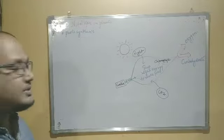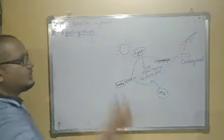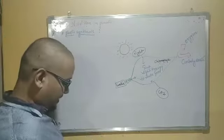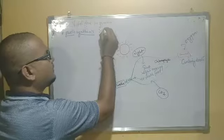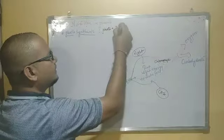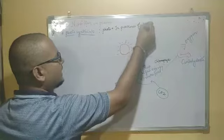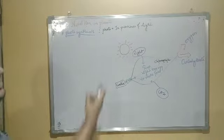What is photosynthesis? It is made up of two words: photo and synthesis. Photo means in presence of light. As you can see, the sun is the source of light here.